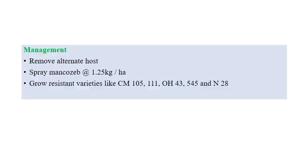Coming to management of rust: removal of alternate hosts is important, as two types of hosts — alternate host and main host — are required. We need to identify and remove alternate hosts that harbor the pathogen during the off-season. Spraying mancozeb at the rate of 1.25 kilograms per hectare is also recommended. Resistant varieties include CM105, 3101, 03545, and N28.